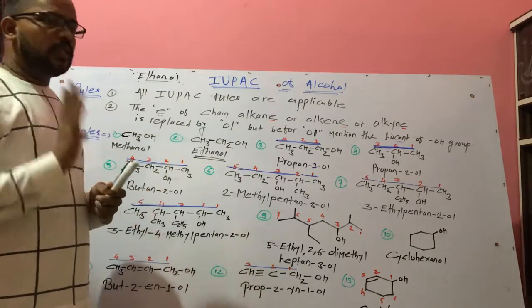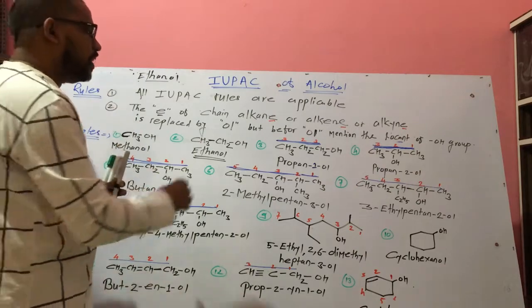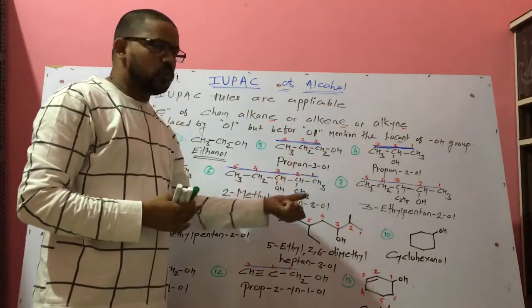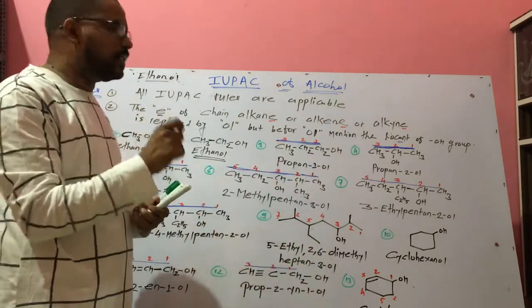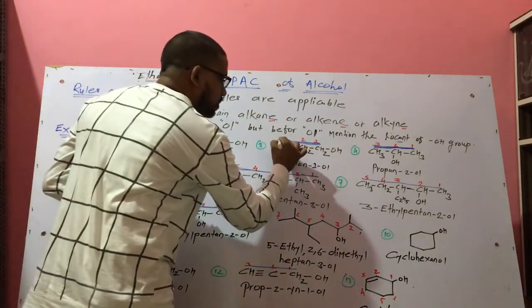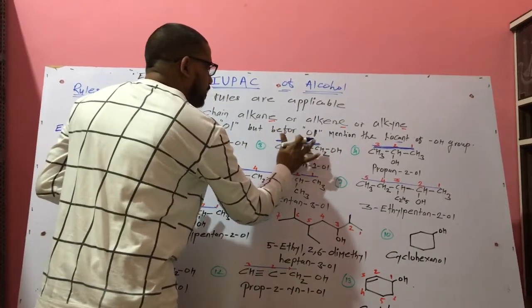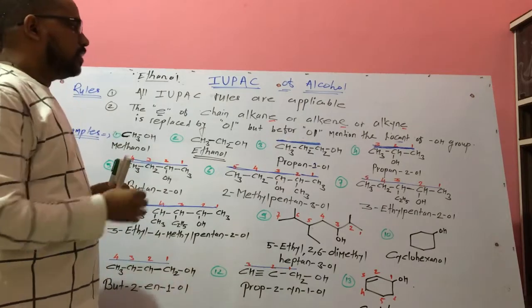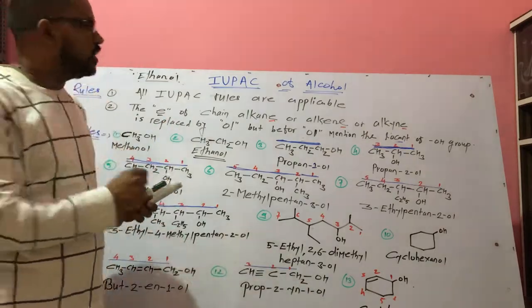You can apply all IUPAC rules to this compound. The first rule: select the longest continuous chain of carbon atoms which contains the functional group. For a compound with three carbons, we select the longest continuous straight chain. The second rule: numbering should start from that carbon atom of the chain in which the functional group-attached carbon atom carries the minimum number.